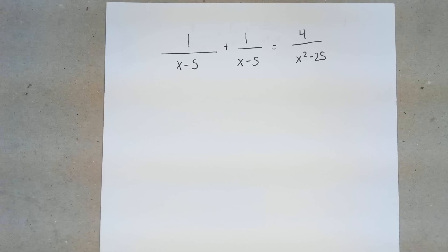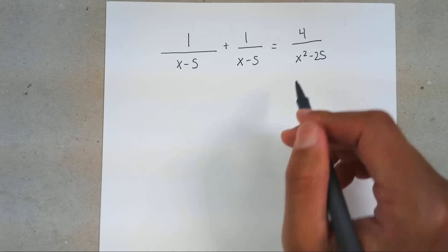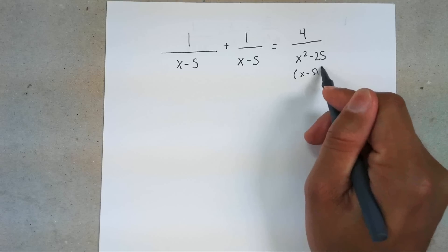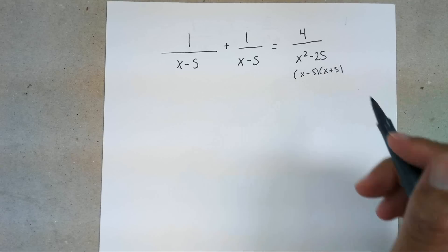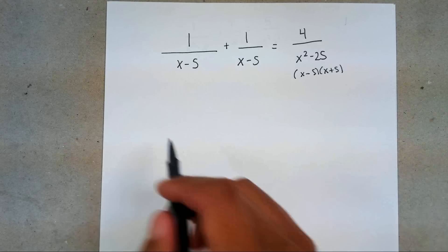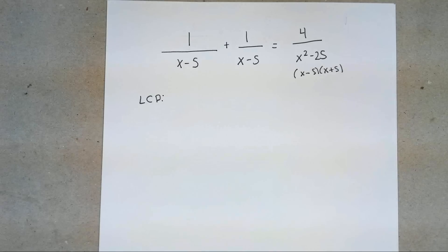So we're going to take a look at this first example: 1 over X minus 5 plus 1 over X minus 5 equals 4 over X squared minus 25. Now the second that we're working with fractions, we have to factor everything out. You'll notice that X squared minus 25 can actually be factored out to give you X minus 5 times X plus 5, since it's the difference of squares. Your next step — the most important step — is to figure out what your LCD is going to be. Your LCD is everything your denominator has.